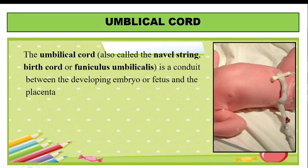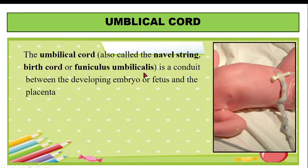The umbilical cord is also called the navel string, birth cord, or funiculus umbilicalis. It is a conduit — a tube-like structure — between the developing embryo or fetus and the placenta. It connects the fetus to the placenta and is covered by a thick jelly-like material called Wharton's jelly, which appears white.